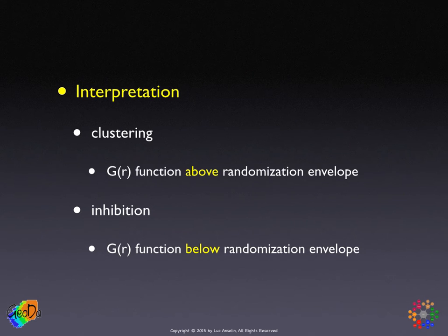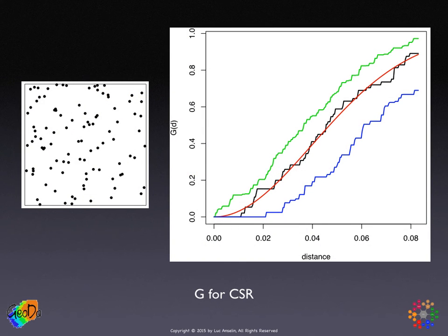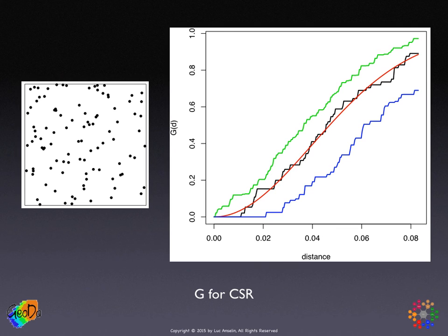The opposite — inhibition or regular pattern — results when the G function is below the randomization envelope, meaning inter-event distances at small distances are much rarer and the cumulative function climbs up very slowly. To illustrate this, three artificially generated point patterns are shown. It's a good exercise to look at the point pattern and think whether it's random or clustered — you'll see how often you're wrong, except in extreme cases. The first is a purely random pattern, where the black line tracks the theoretical line very nicely and stays near the center of the simulation envelope.